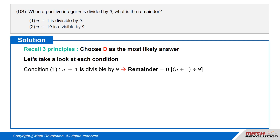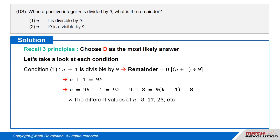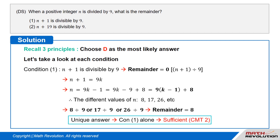Condition 1 tells us that n plus 1 is divisible by 9, which means the remainder is 0 when n plus 1 is divided by 9. Thus, n plus 1 equals 9k, that is, n equals 9k minus 1, which can be rewritten as 9(k minus 1) plus 8. The different values of n are 8, 17, 26, etc. In each case, the remainder is 8 when divided by 9. This condition has a unique answer and is therefore sufficient by CMT2, which states the number of answers must be 1.